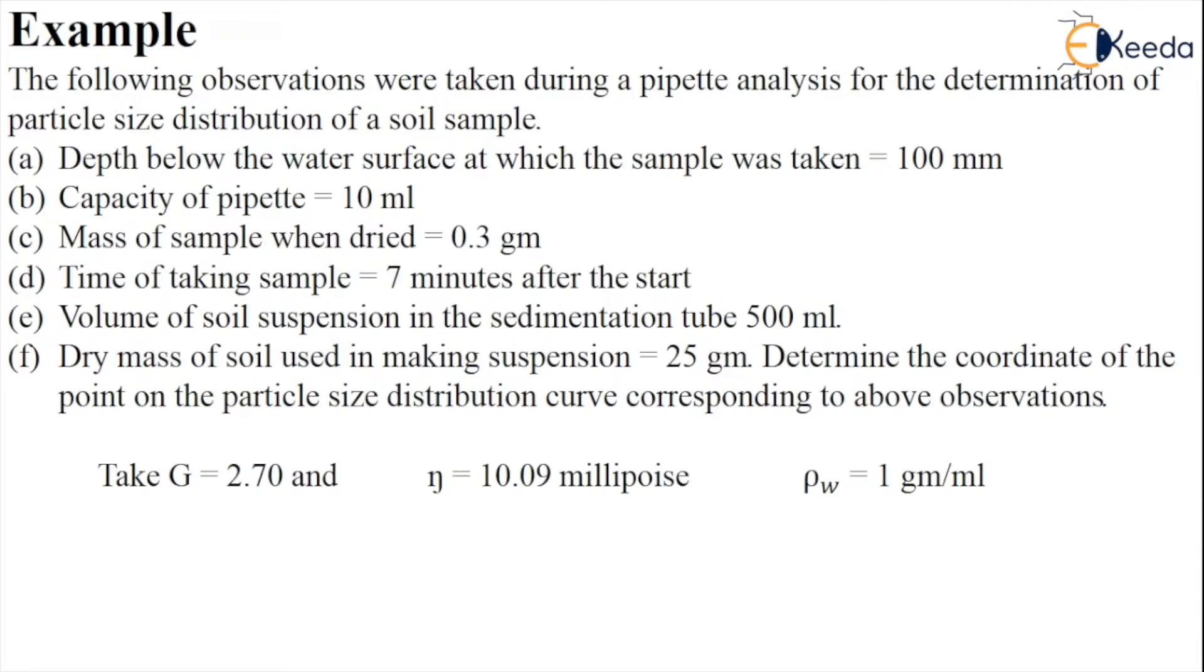Depth below the water surface at which the sample was taken is 100 mm. Capacity of the pipette is 10 ml. Mass of the sample when dried is 0.3 gram. Time of taking sample is 7 minutes. Volume of soil suspension in sedimentation tube is 500 ml. Dry mass of soil used in making suspension is 25 grams.